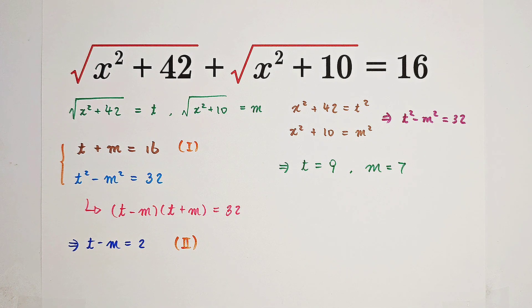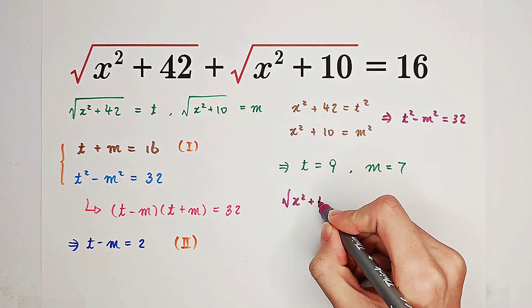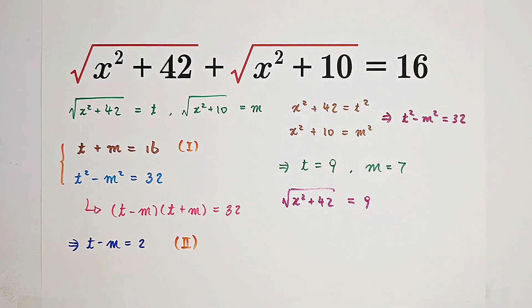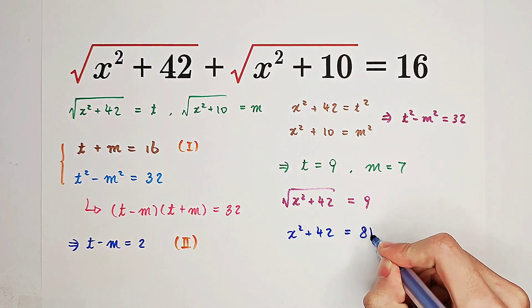If we get this, let's solve for x. Square root of x squared plus 42 is t, and t is 9, so that means x squared plus 42 equals 81.